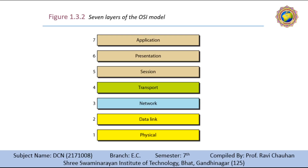The OSI model is a layered framework for the design of network systems that allows communication between all types of computer systems. It consists of seven separate but related layers, each of which defines a part of the process of moving information across the network, as shown in the figure. An understanding of the fundamentals of the OSI model provides a solid basis for exploring data communication. The seven layers of the OSI model are: physical, data link, network, transport, session, presentation, and application. Each layer has its own role in data communication and networking, and we will see each layer in detail in the next session.